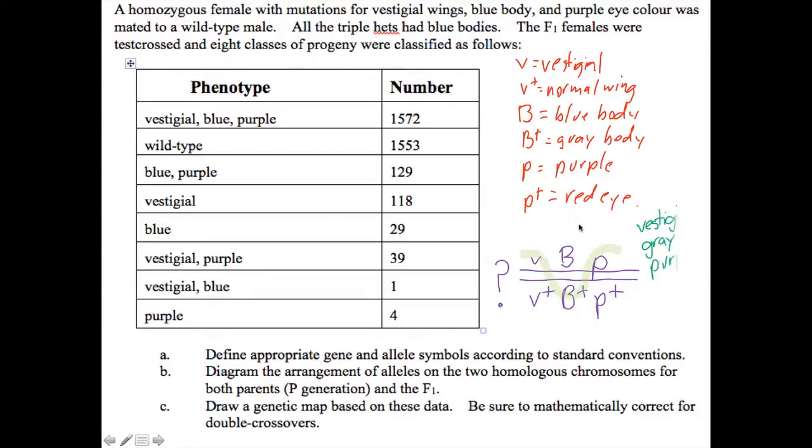We have all of the mutations in coupling and all of the wild types in coupling as well. If we run a line through we know that we'll get vestigial gray purple. The gray isn't listed in the table of phenotypes. That's just sort of the color that the fly normally is. Anywhere there's a blank you can assume it has the wild type version of that trait. Looking here we want to see if our smallest phenotypic class has the double crossover and it does not. That tells us that this isn't the order. Blue is not in the middle because we don't have vestigial gray purple as either of our smallest double crossover classes.